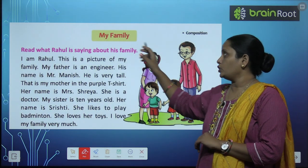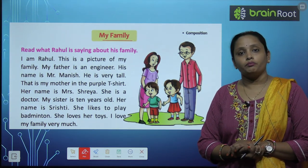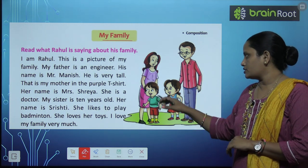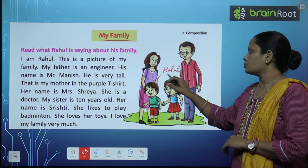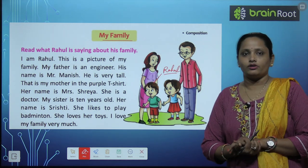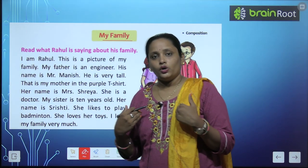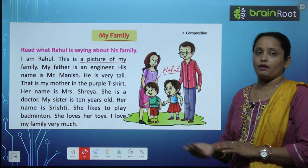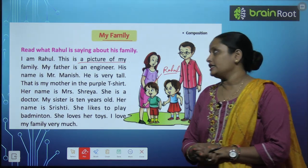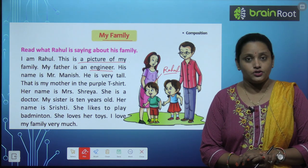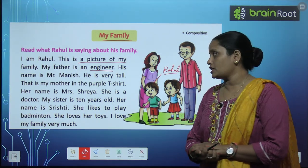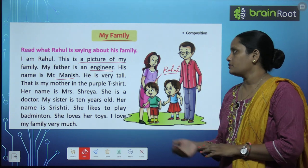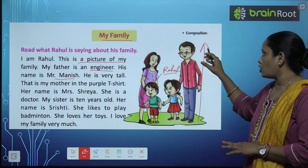Children, let's learn something new which is about my family. Read what Rahul is saying about his family. Here this is Rahul, and he is telling us about his family. Let's see how many family members Rahul has. Let's read it. I am Rahul. This is a picture of my family. My father is an engineer. His name is Mr. Manish. He is very tall.